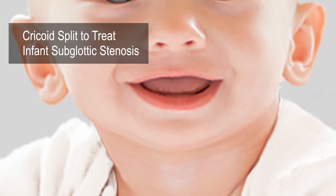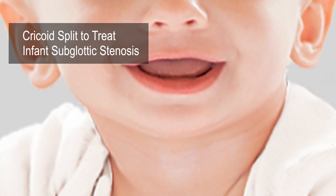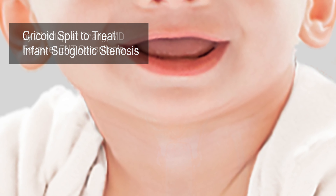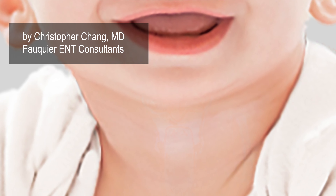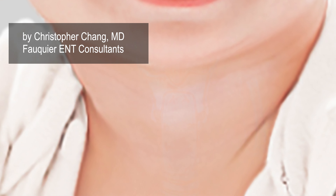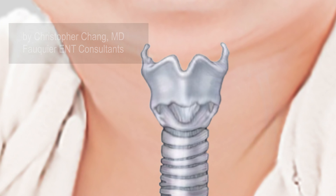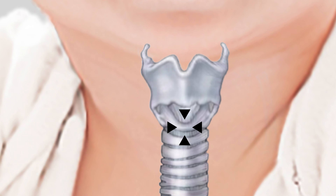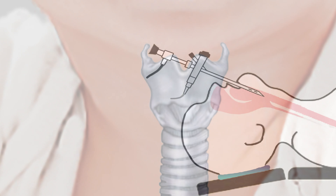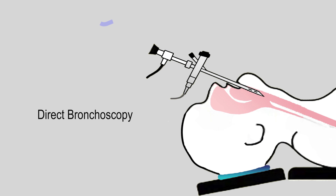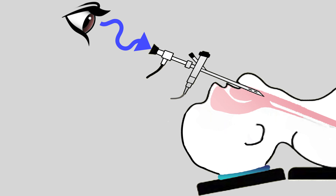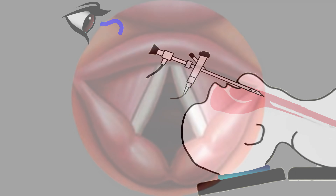Historically, tracheostomy was used to address any airway obstruction in infants due to a congenital or acquired subglottic stenosis. Subglottic stenosis is a narrowing of the airway at the level of the cricoid cartilage. Airway obstruction due to subglottic stenosis can be visually detected during bronchoscopy when looking down at the larynx.